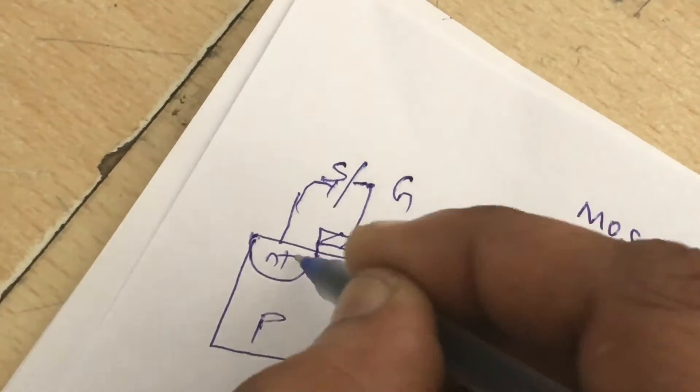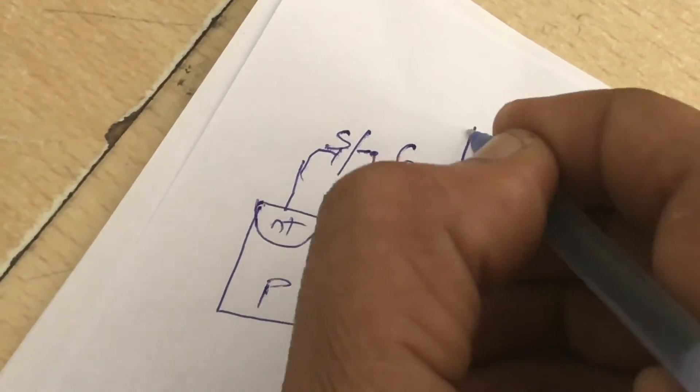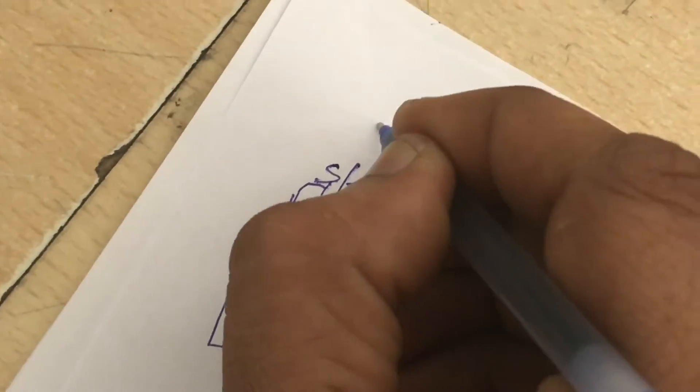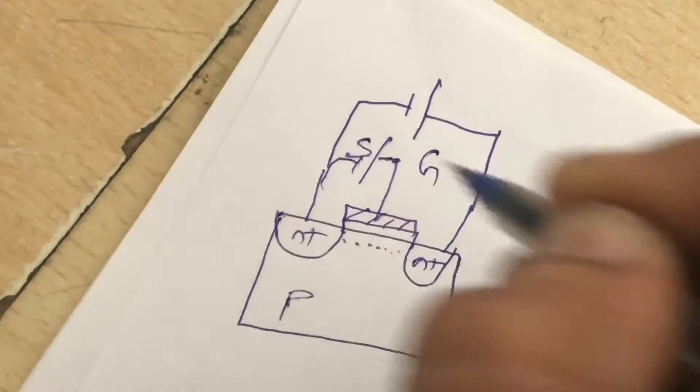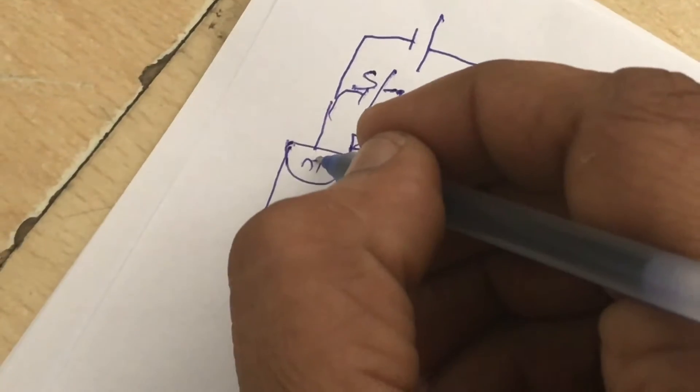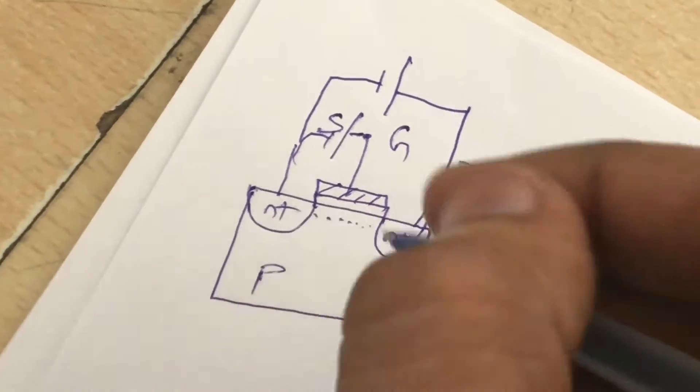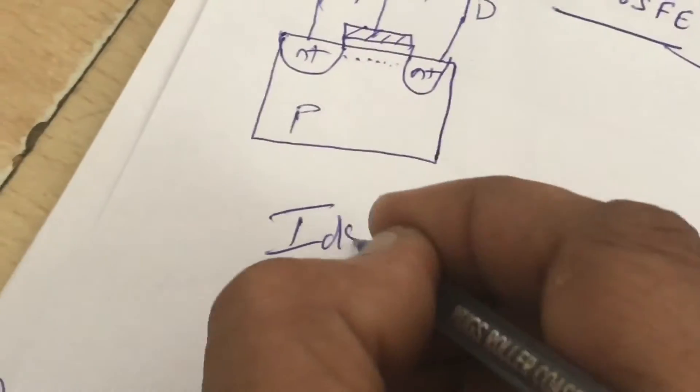Now by application of positive drain with respect to source, the current starts flowing from source to drain, so we have a drain-source current, what you call as IDS.